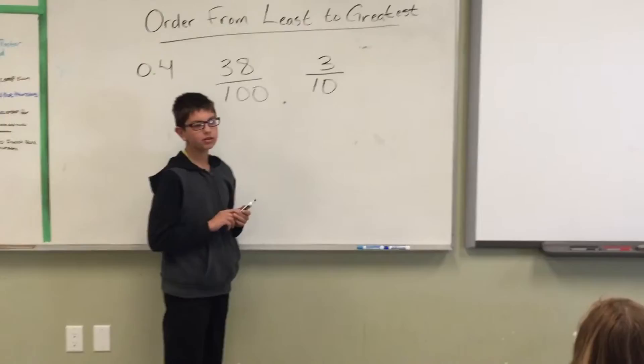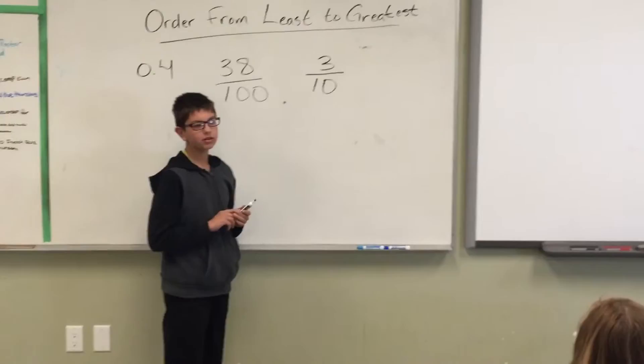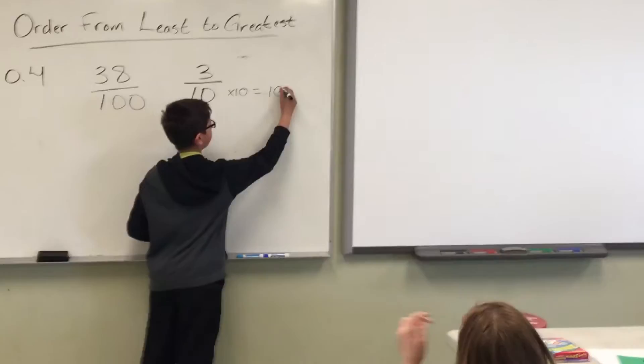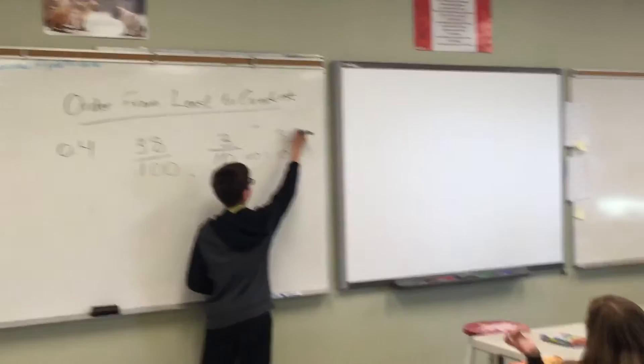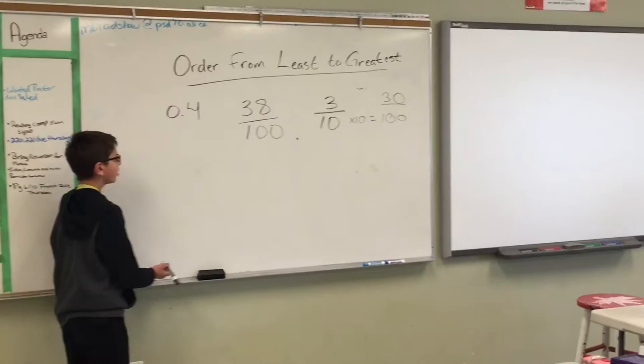So, let's get from 10 to 100. How would we get from 10 to 100? Isabel? Multiply by 10. Okay. 10 times 10, and that equals 100. And then we do the same to the numerator. 10 times 10 is 30. So that's now 30 over 100.